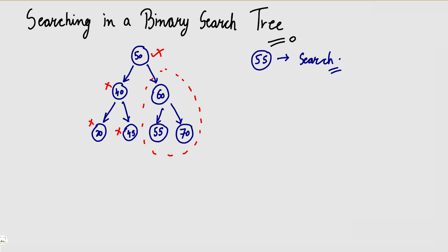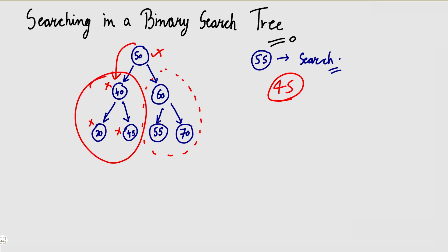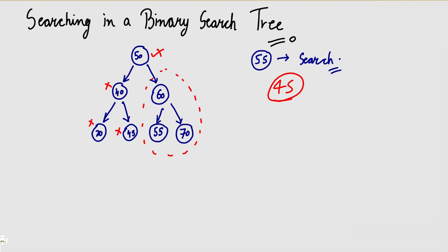For example, if I say search for 45: you will see — bigger, smaller — meaning it will be here. Then bigger or smaller again — it will be here. So you can search in a binary search tree by following comparisons at each node to navigate down the tree.